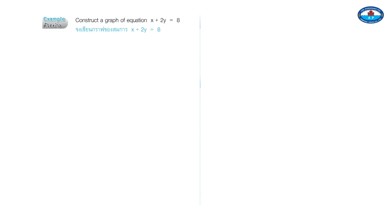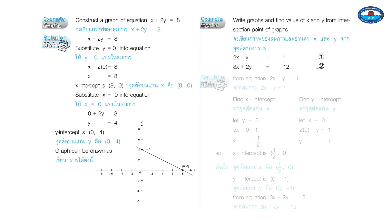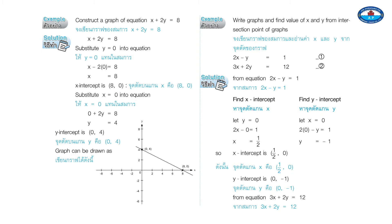Example: Construct the graph of x plus 2y equals 8. Substitute y equals 0: x equals 8, so the x-intercept is (8, 0). Substitute x equals 0: 2y equals 8, y equals 4, so the y-intercept is (0, 4). The graph can be drawn through these two points.